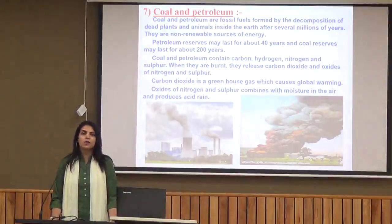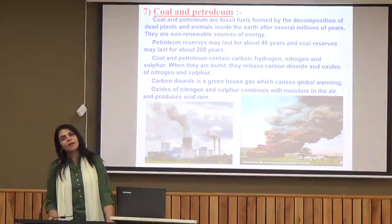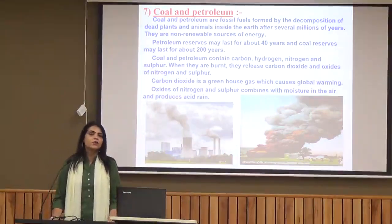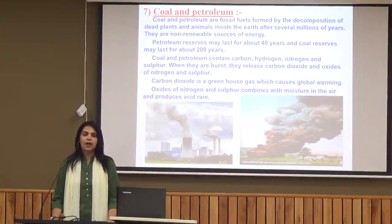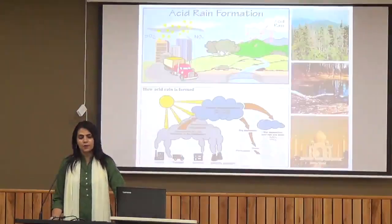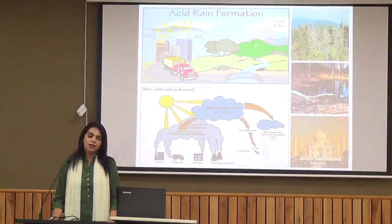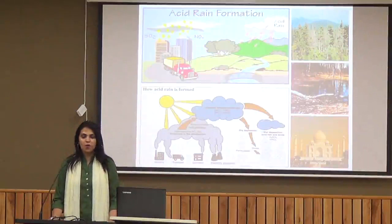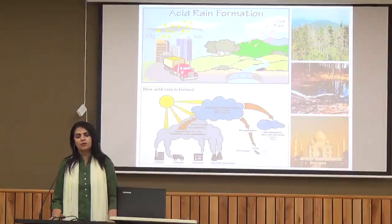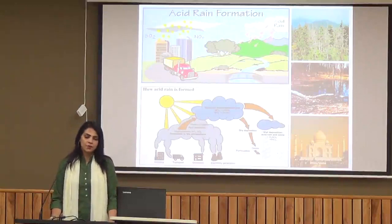When coal and petroleum are burned, they release carbon dioxide, and oxides of nitrogen and sulfur. Carbon dioxide is a greenhouse gas which causes global warming. Oxides of nitrogen and sulfur may combine with moisture in the air and lead to acid rain. Acid rain is formed when oxides of sulfur and nitrogen combine with moisture present in the upper atmosphere.